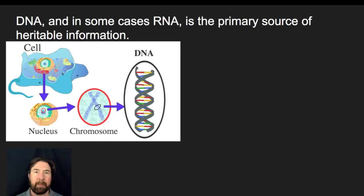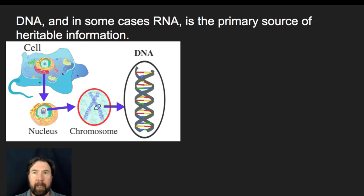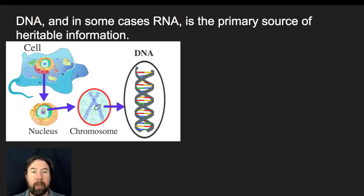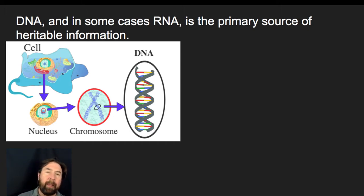Now let's talk about DNA specifically — we'll also mention RNA. When we talk about hereditary information in cells, we're predominantly talking about DNA. In a eukaryotic cell, inside the nucleus, there is DNA. During times of division, it becomes visible as X-shaped chromosomes. If we zoom in deeply on that, we can see the double helix DNA structure.